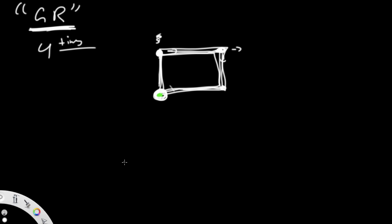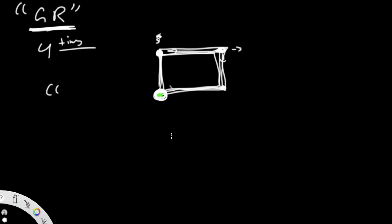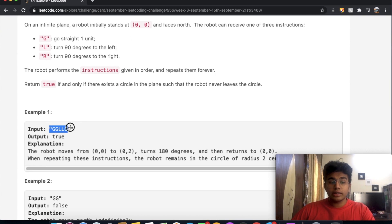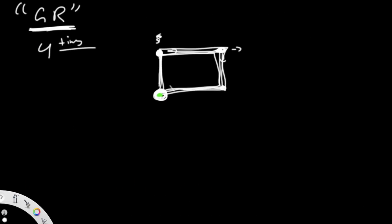If we had a different instruction like just G — go straight — we'd keep moving unit by unit with no stop. There has to be some sort of cycle. To detect one, we need to run the instructions at most four times. If there's a cycle after just one iteration, great. But four iterations is the maximum needed. If there is no cycle after four times, there is no cycle at all.